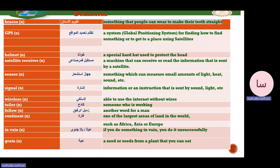A sensor is something which measures a small amount of light or heat. A signal is information or instructions sent by sound or light — mostly not a physical one. Wireless means able to use the internet without wires. A tailor is someone who works hard. Fellow is another word for man or friend. Continent is a large area of land like Africa and Asia. In vain means useless — if you do something in vain, you do it unsuccessfully. Grain means seeds from a plant that you can eat.